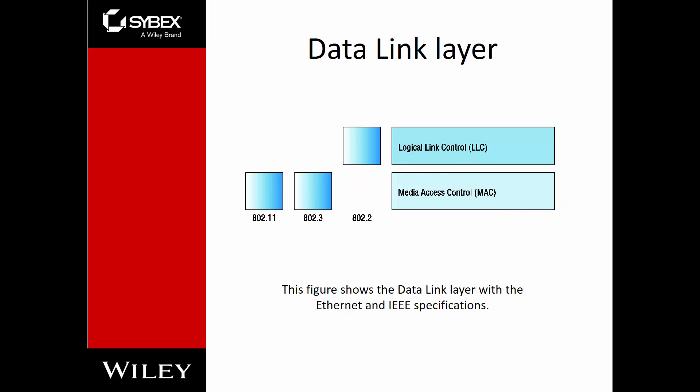The Data Link layer is broken up into two sublayers: the Logical Link Control (LLC) and the Media Access Control (MAC). Protocols like 802.3 Ethernet or 802.11 have specific components that are part of the MAC or the LLC, since each one handles specific tasks. The MAC deals with allowing access to the media, while the LLC deals more with framing.